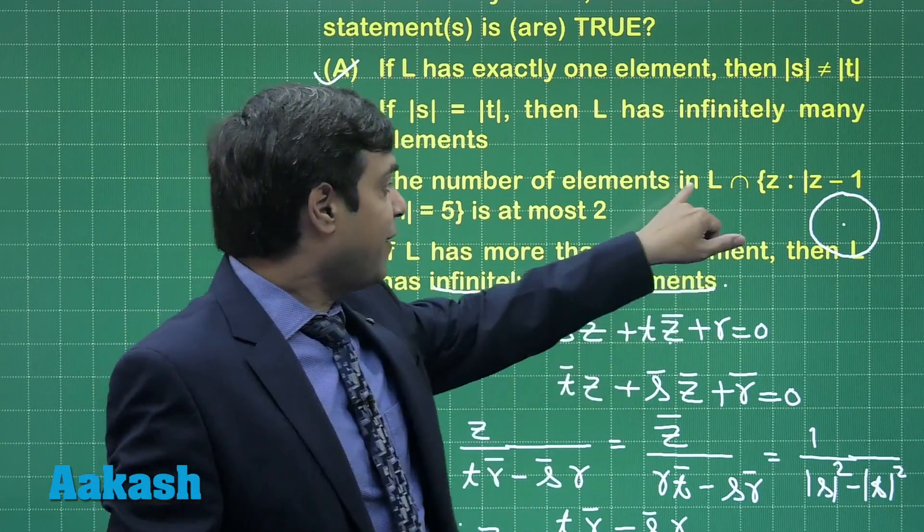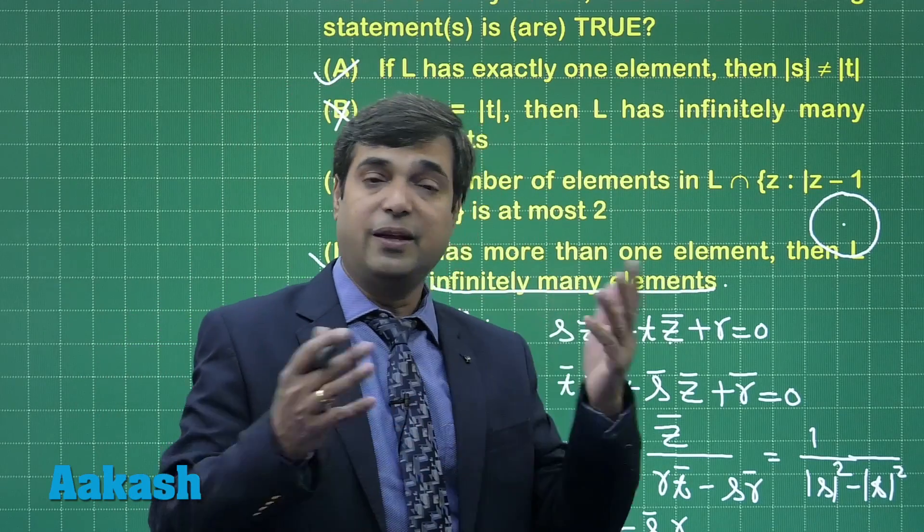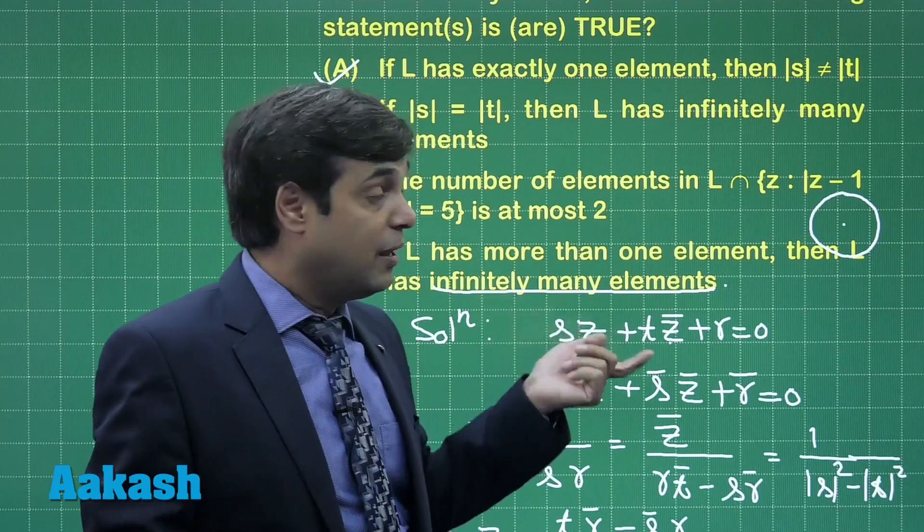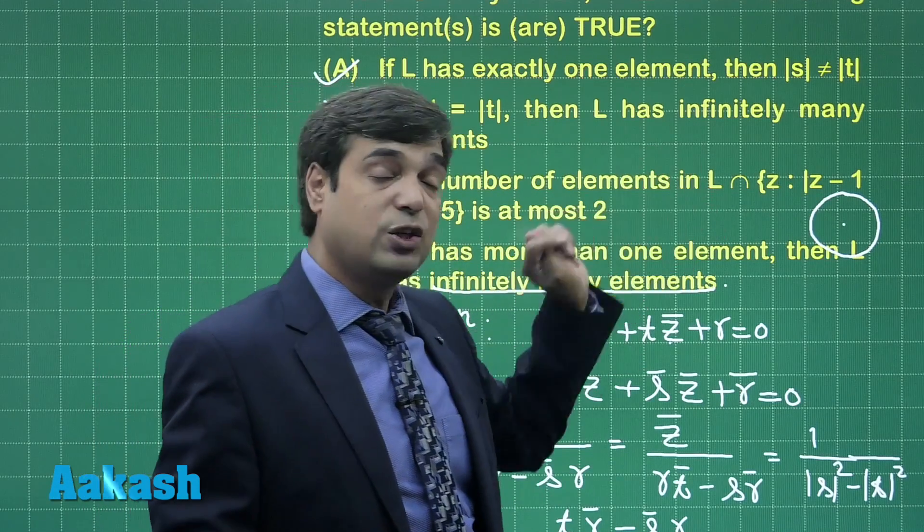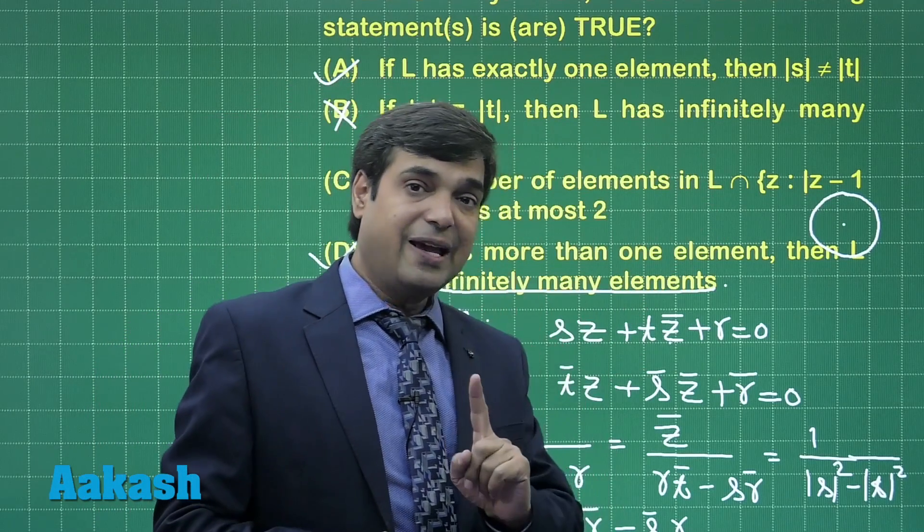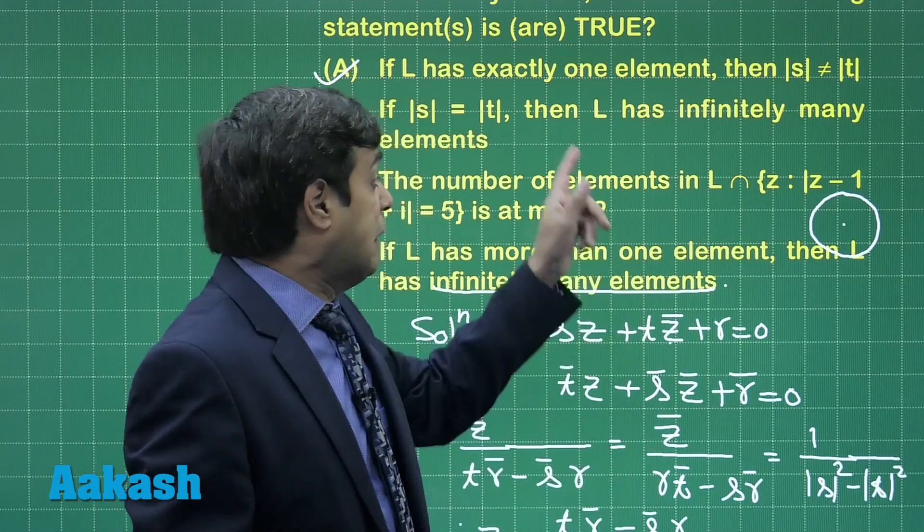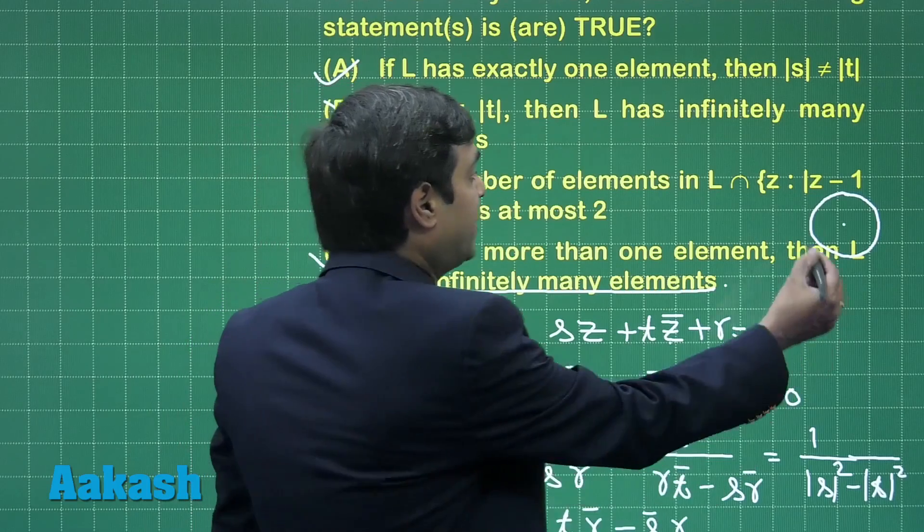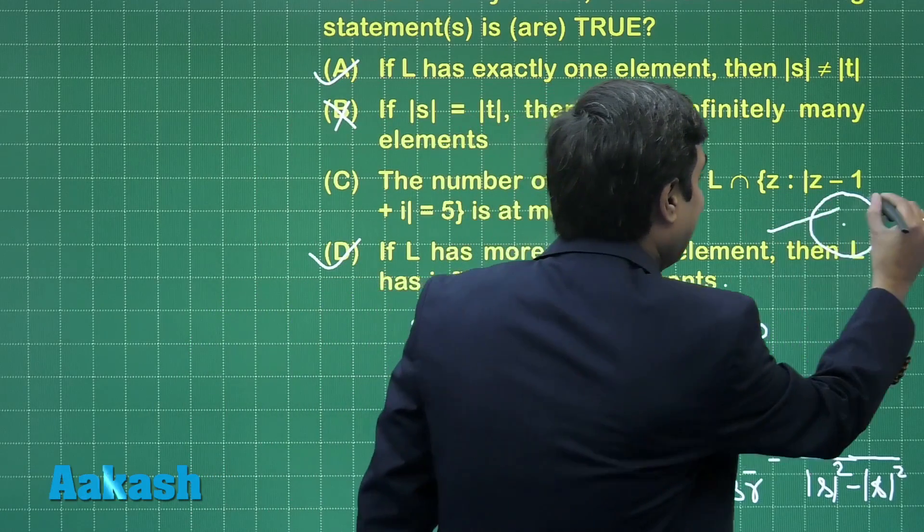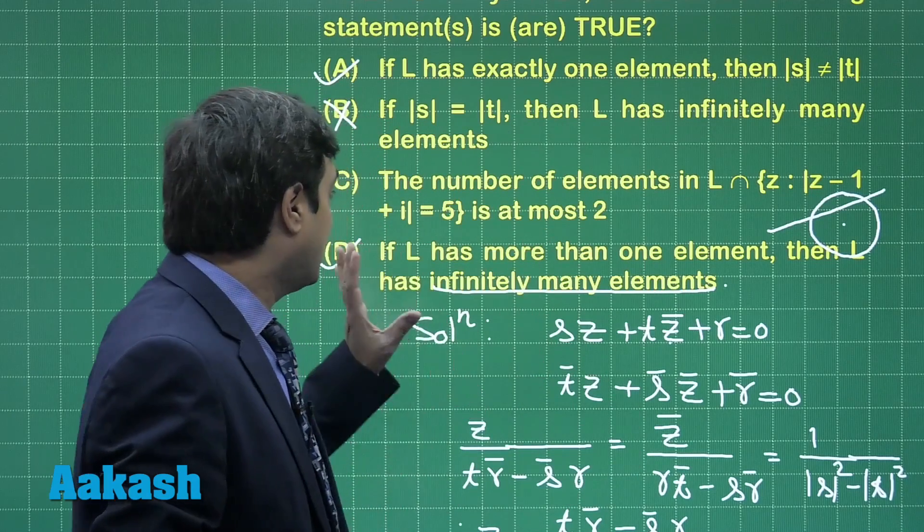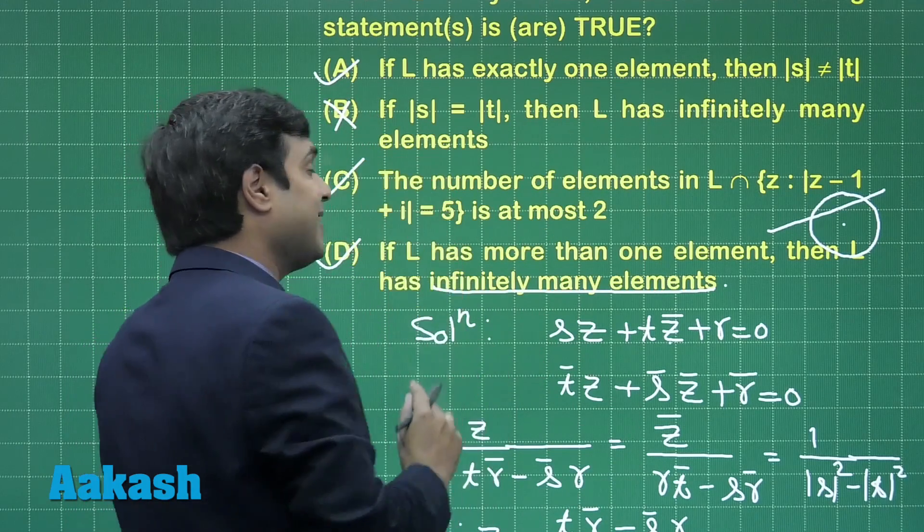Possibility 1: if L has no solution then obviously no solution is there, meaning no element is there in this intersection. Possibility 2: L has unique solution. If L has unique solution then at most obviously one we are getting. In case maximum possibility for this intersection can be at most 2. So at most 2 solutions are possible, this is correct.